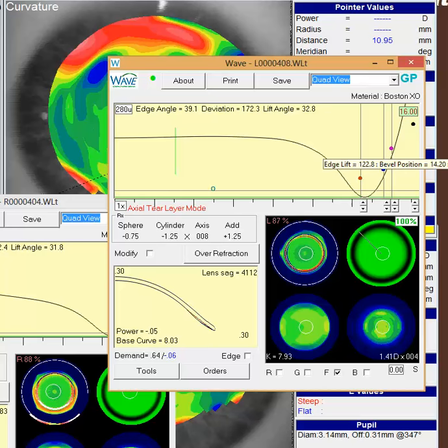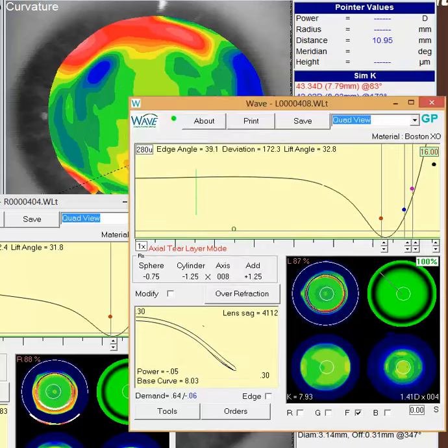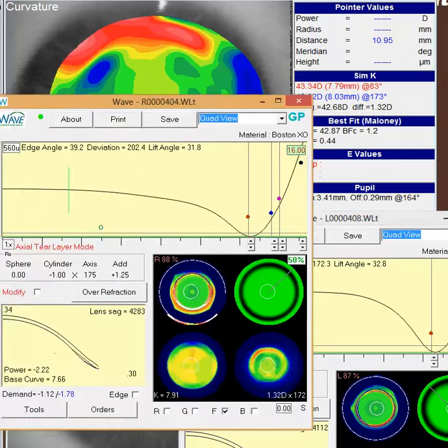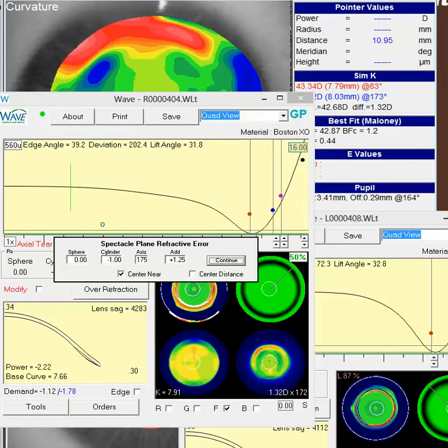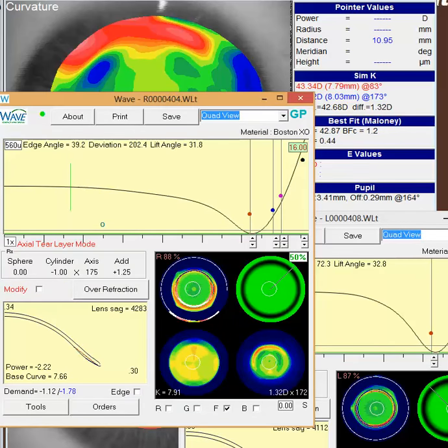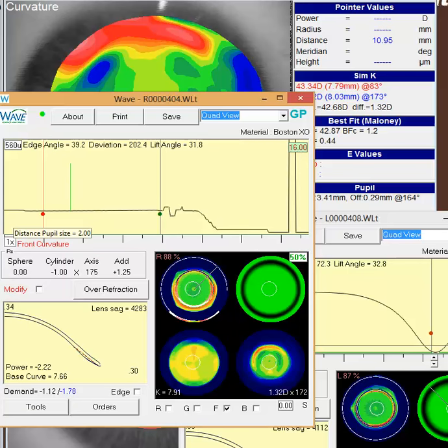Again, you could also go to a little smaller design or that mini-scleral design. When it comes to the power, I think you're the right choice going with the center near lens. And of course, if you do add the distance power, it's going to neutralize some of that bifocal power that you have in there. You already have a pretty small pupil size in there. So you have a couple of options with that.